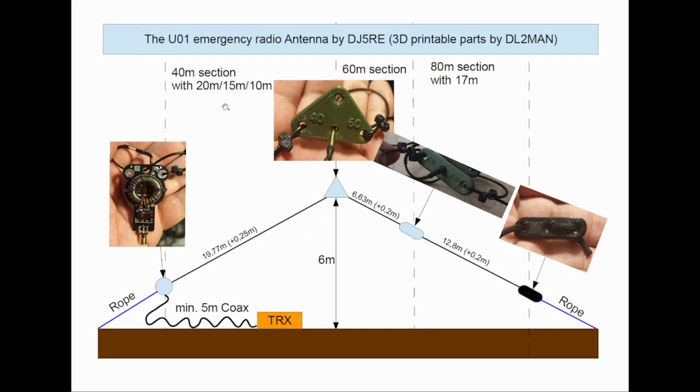Basically, if you just add to a broadband transformer 19.77 meters plus 0.25 meters for the insulator loop and the feeding loop, then you already have an antenna for 40, 20, 15, and 10 meters.